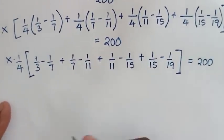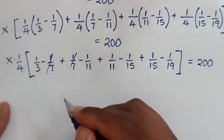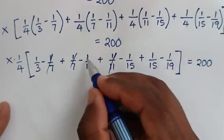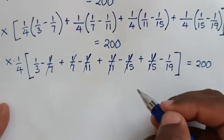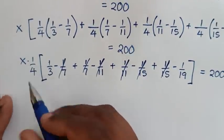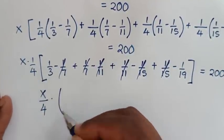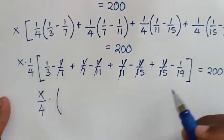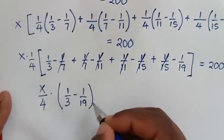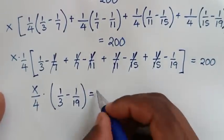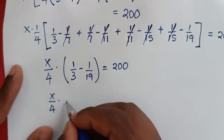Now the terms telescope: 1/7 minus 1/7 cancels, 1/11 minus 1/11 cancels, 1/15 minus 1/15 cancels. So we are left with x times 1/4 times bracket (1/3 minus 1/19) bracket equals 200.